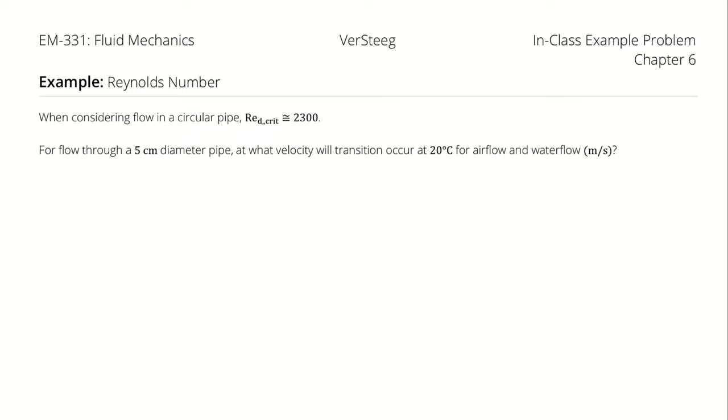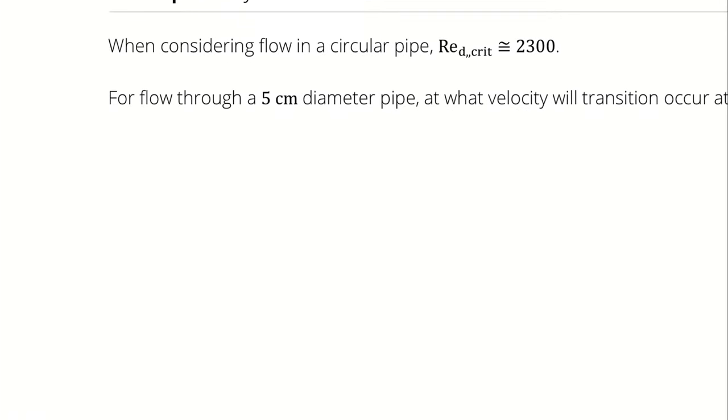When considering flow through a circular pipe, we use a Reynolds number with respect to diameter of 2300 as the critical Reynolds number. For flow through a 5 centimeter diameter pipe, at what velocity will transition occur at 20 degrees Celsius for airflow and water flow in meters per second?